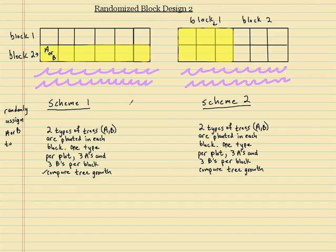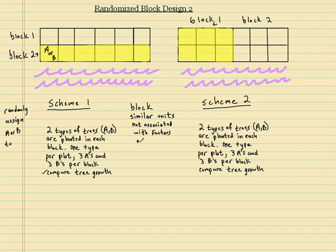Which scheme is better? If we go back to what a block is: a block is where we have similar units — similar units not associated with the factors or response. Here, the factors are the trees — tree A and tree B — and we think tree A is going to grow more or tree B is going to grow more. The response is how much they grow. So what we want to be similar are the things that may affect the growth that aren't associated with the trees.